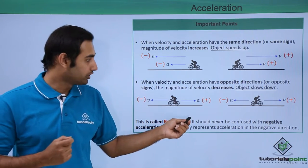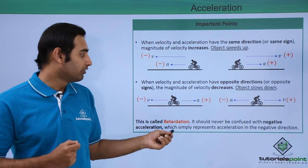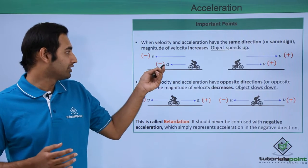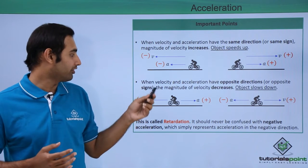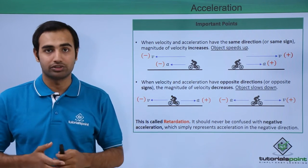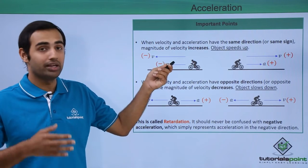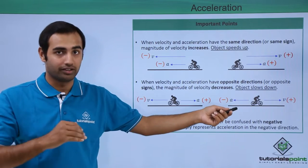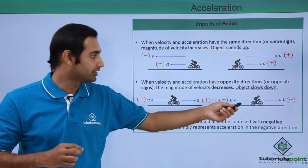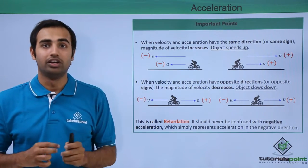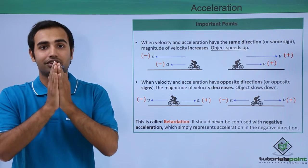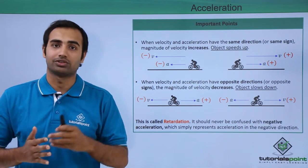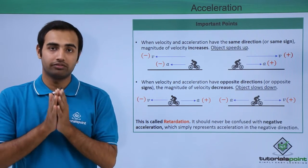Retardation should never be confused with the term negative acceleration, which simply represents acceleration in the negative direction. An acceleration that is negative can still make an object speed up if the velocity is also negative. The phenomena of retardation is happening only when velocity and acceleration are oppositely directed. So the word negative acceleration is actually wrong to use for the phenomena of retardation or an object slowing down. This is a very important thing which you must remember.